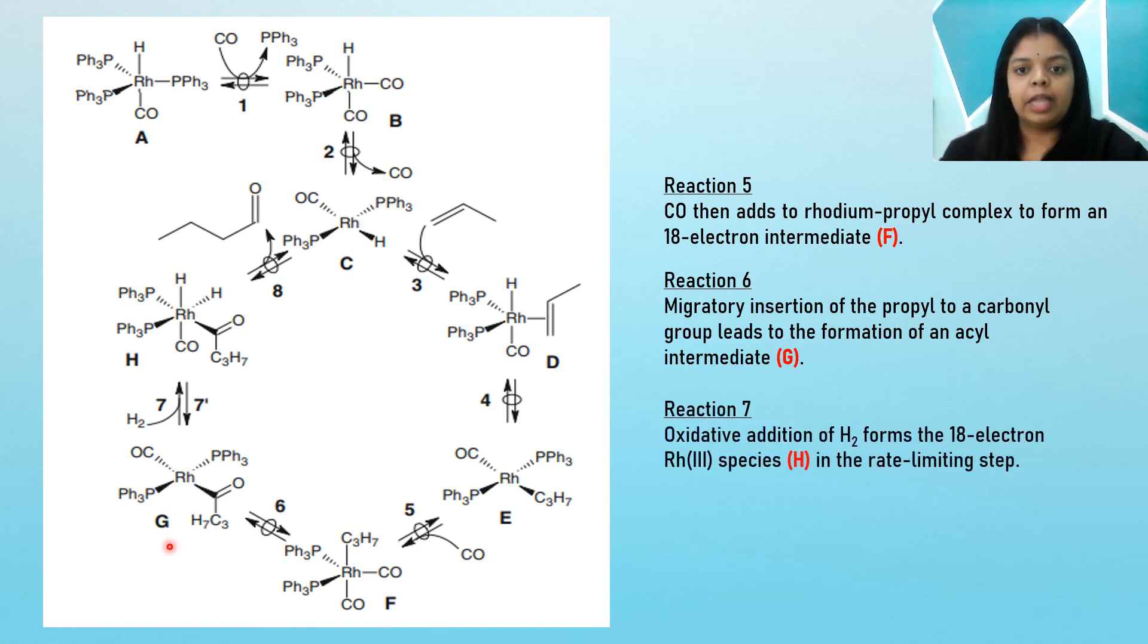From the acyl intermediate, we will have an oxidative addition of hydrogen. This step, reaction seven, is also known as the rate-limiting step. The oxidative addition of hydrogen will form an 18-electron rhodium(III) species.